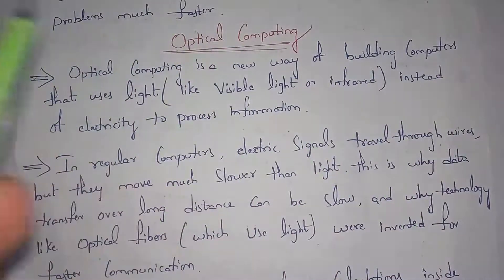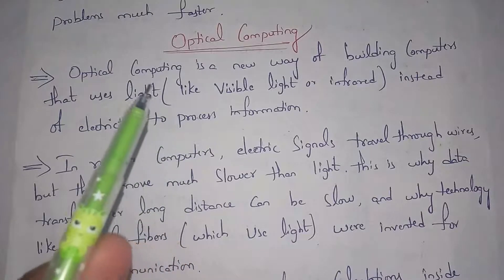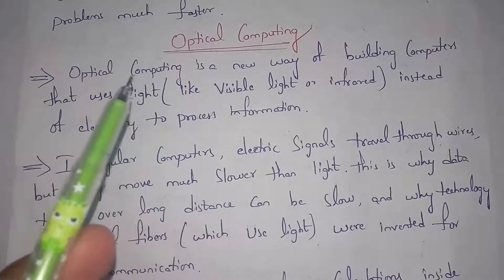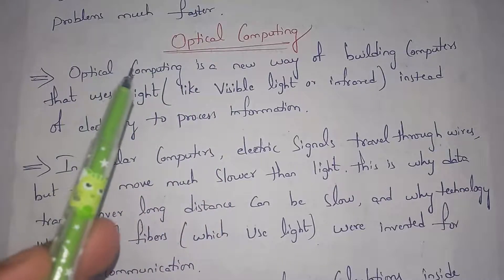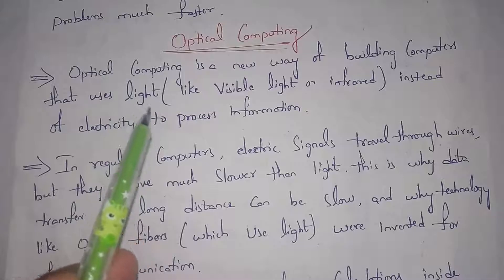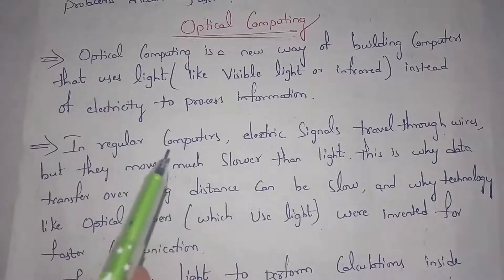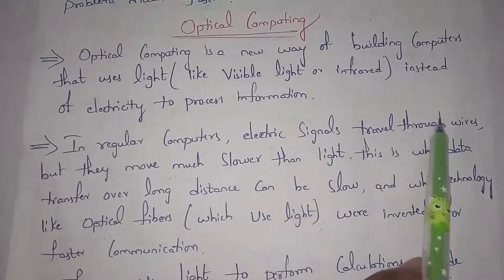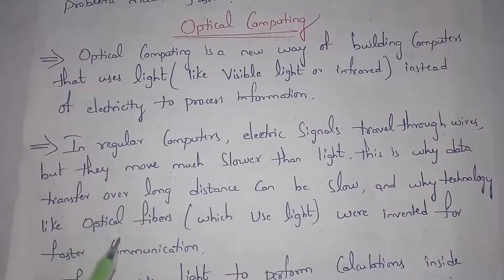Next I will explain what is optical computing. Optical computing is a new way of building computers that uses light instead of electricity to process information. Normally in order to process information we use electricity, but in optical computing we will use light instead. That light can be either visible light or infrared light. Normally in regular computers electric signals travel through wires, but these signals are very slow compared to light. That is why if we transfer data over long distances it will be very slow.